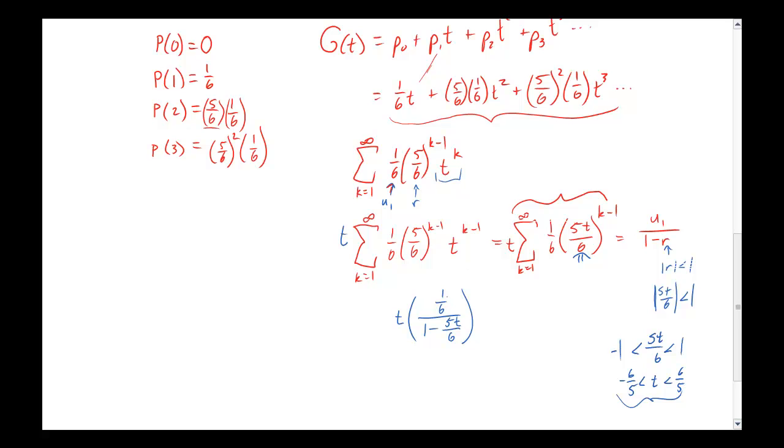Now, if we kind of finish this off, we don't really like fractions inside of fractions. So what I'm going to do is multiply the top and bottom by 6, which will give me T times 1 over 6 times 6 would be 1. 6 times the bottom would give me 6 minus 5T. And put it all together to simply get T over 6 minus 5T. And so this is my probability-generating function for the geometric distribution that I started with.